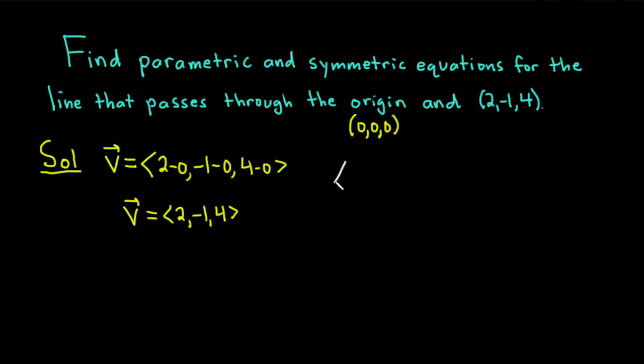The parametric equations for a line are x equals x0 plus a t, y equals y0 plus b t, and z equals z0 plus c t.